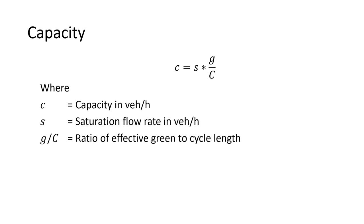So that's how we get capacity — it's a ratio of how much effective green time a certain movement has out of the total cycle, times the saturation flow rate. That'll do it for this time; we'll continue talking about traffic signals next time.